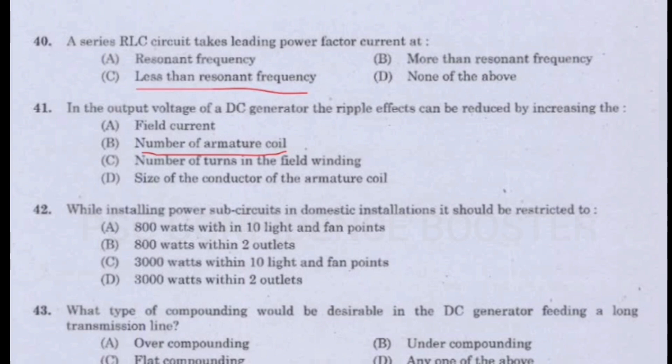Question number 42. While installing power subcircuits in domestic installation, it should be restricted to: Option A - 800 watts within 10 light and fan points. Option B - 800 watts within 2 outlets. Option C - 3,000 watts within 10 light and fan points. Option D - 3,000 watts within 2 outlets. Answer is Option D: 3,000 watts within 2 outlets.